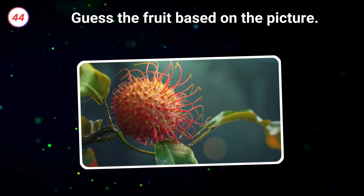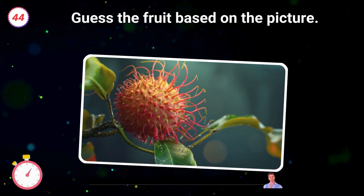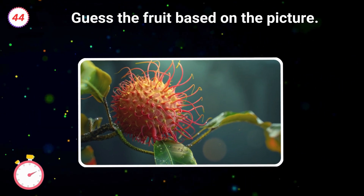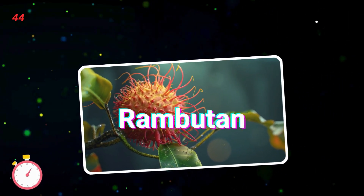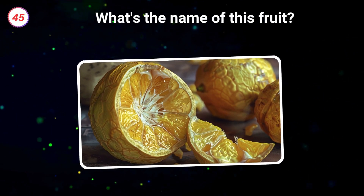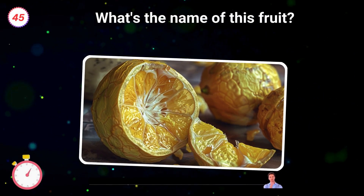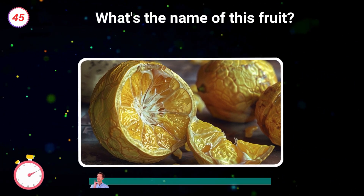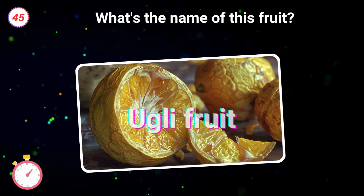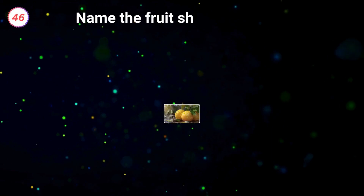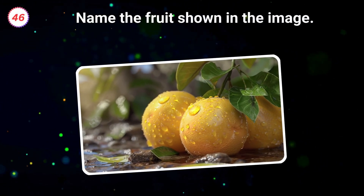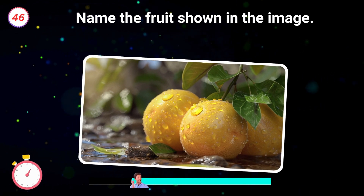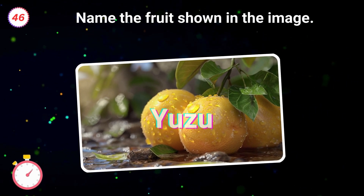44. Guess the fruit based on the picture. Rambutan. 45. What's the name of this fruit? Ugly fruit. Name the fruit shown in the image. Yuzu.